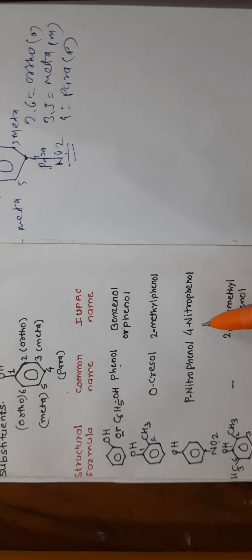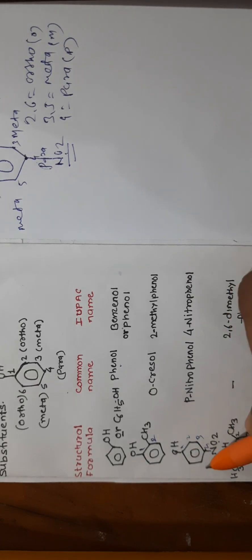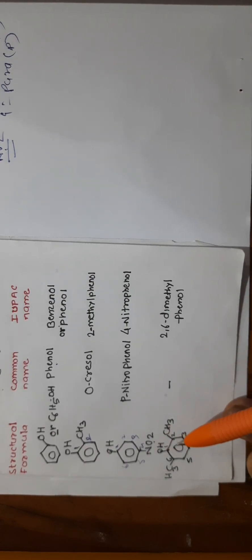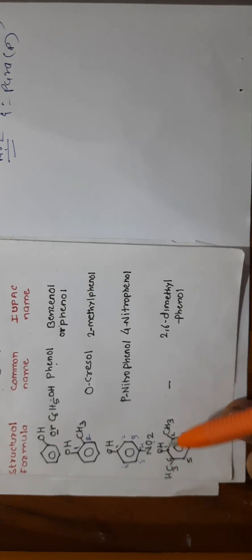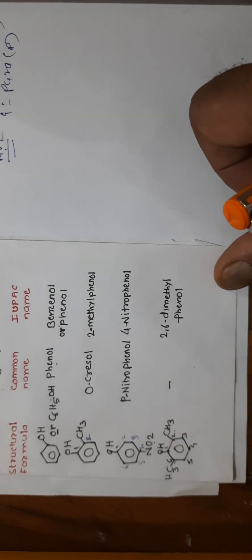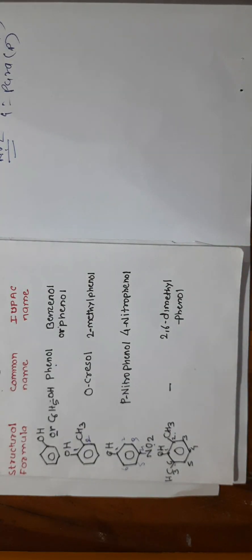When a NO2 group is at the para (fourth) position, the common name is para-nitrophenol and the IUPAC name is 4-nitrophenol. If more than one substituent is present, for example two methyl groups at positions two and six, the IUPAC name is 2,6-dimethylphenol.